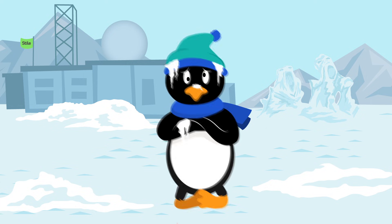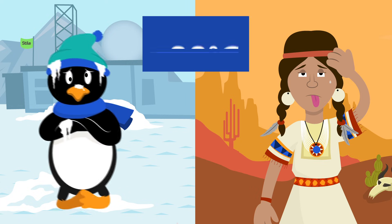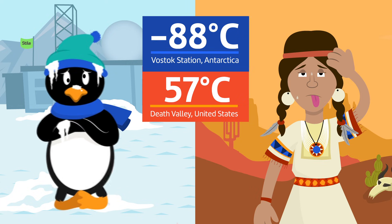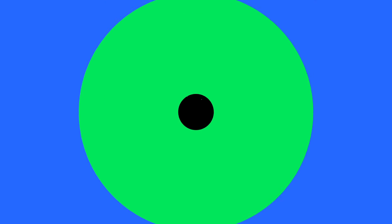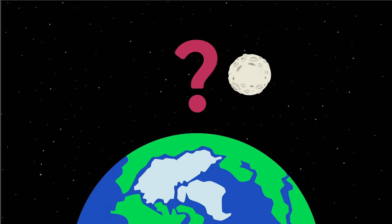The Earth has a much smaller range of temperatures too. Minus 88 and plus 57 are the lowest and highest on record. So, why the difference? The answer is the atmosphere.